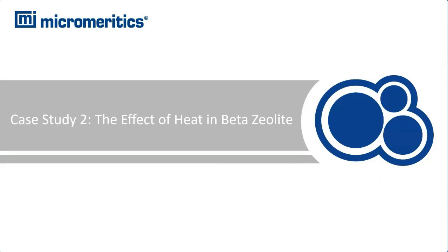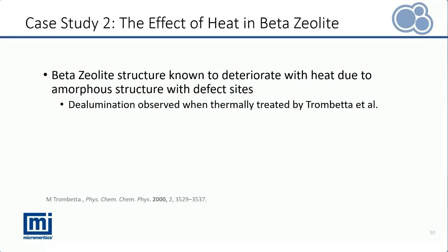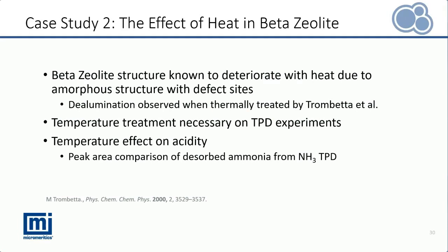The second case study involved investigating the effect of heat on beta zeolite. Beta zeolite is known to deteriorate with heat due to its amorphous content with some defect sites. Trombetta et al. also observed de-alumination when the material was heated. This can be a serious disadvantage of using the TPD method since temperature ramping is necessary. We will see the effect of temperature on acidity by comparing the total peak area from ammonia TPD using consecutive ramping versus separate ramping. By consecutive ramping, I mean using the same sample for several ramps including 3, 10, 15, and 25 degrees Celsius per minute.